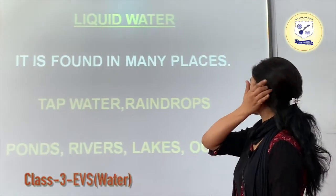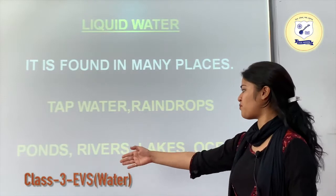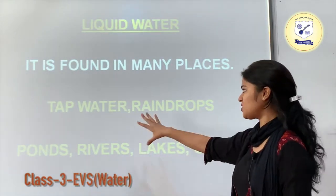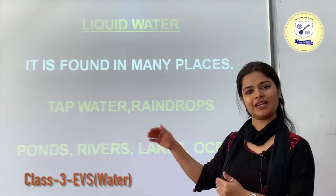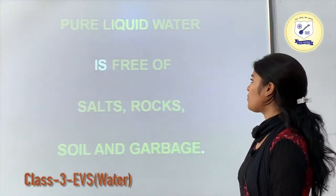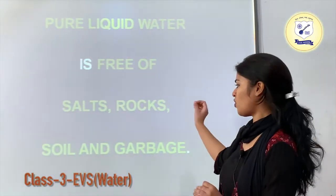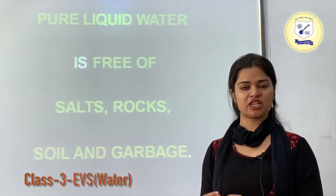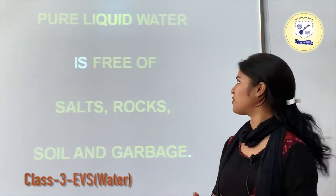Liquid water is found in many places like tap water, raindrops, ponds, rivers, lakes, and oceans — all these contain water in liquid form. Pure liquid water is free of salt, rocks, soil, and garbage. That would be the purest form of water, which we use for drinking purposes.